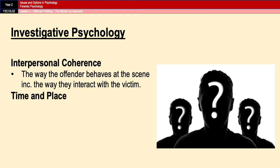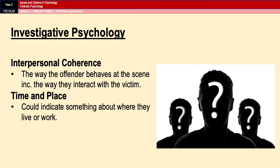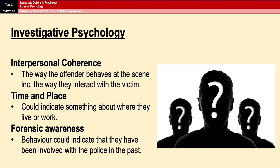The significance of time and place is also a key variable, because it could indicate where the offender lives and works, or at least what area they feel comfortable in and know their way around. Forensic awareness gives an indication as to whether or not the offender has been part of a police investigation in the past. The behavior could indicate how good they are at covering their tracks, suggesting they may already be known to the police and potentially in the system.